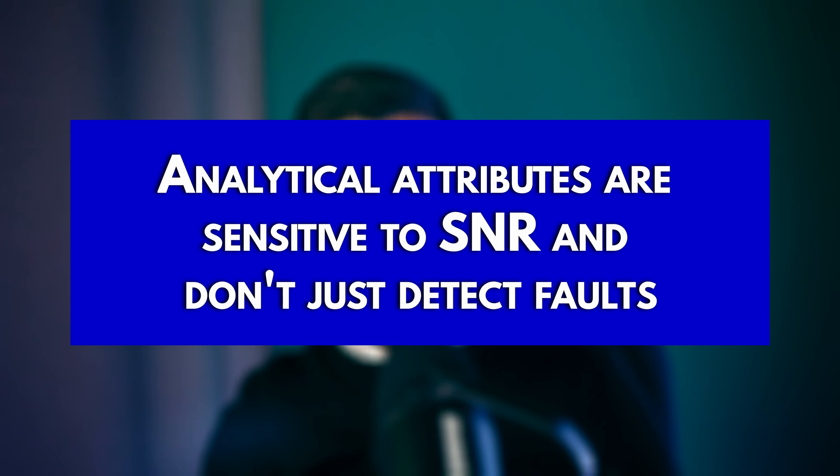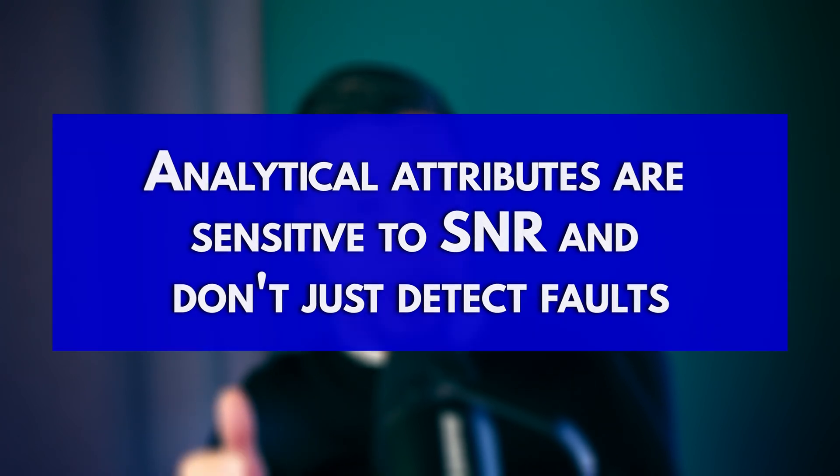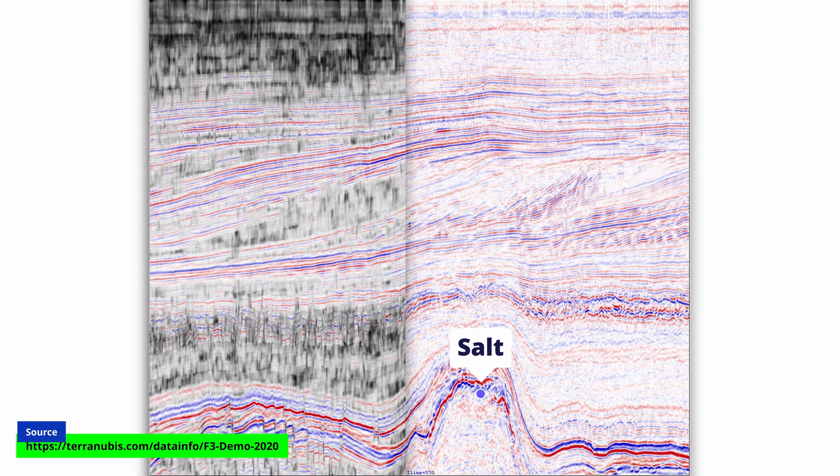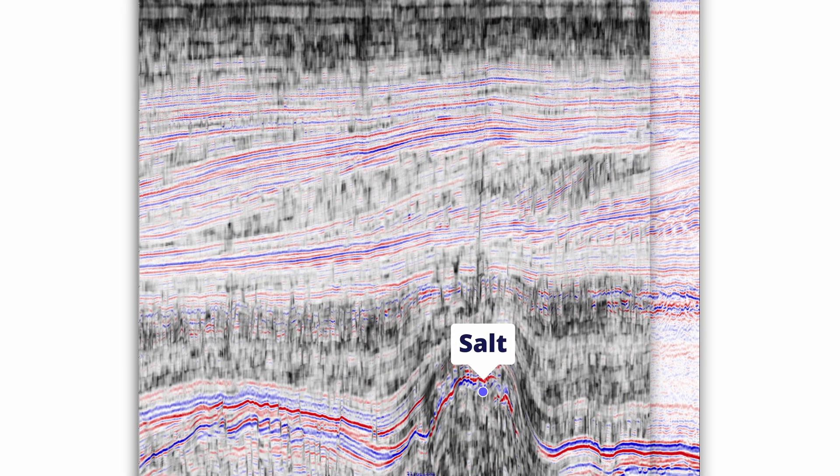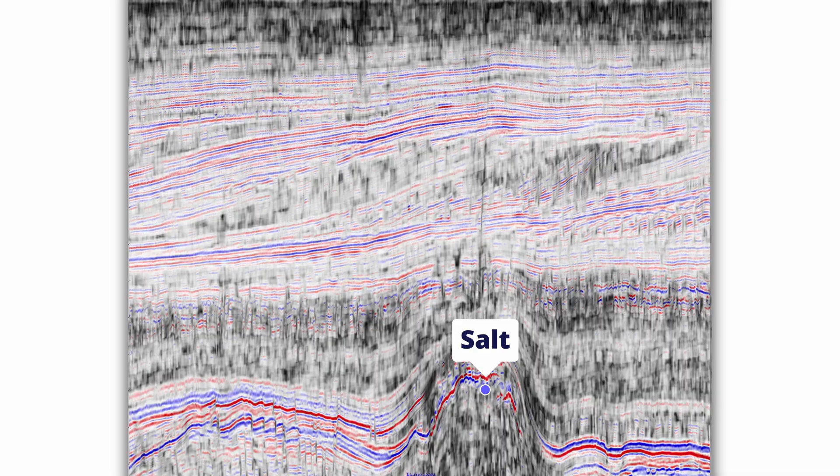Based on my experience of building analytical solutions starting from 2014, the fundamental problem is that the traditional attributes are sensitive to recorded noise and stratigraphic features that look like reflection discontinuities. For example, salts and channels will also be included in that attribute. This implies that detecting faults requires more than just measuring discontinuity of seismic reflection.